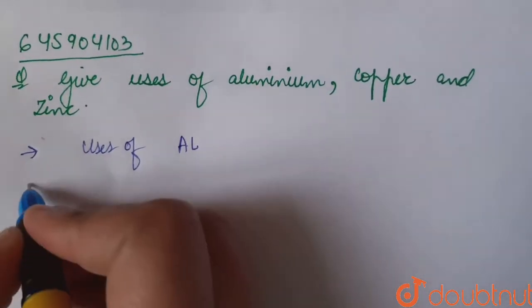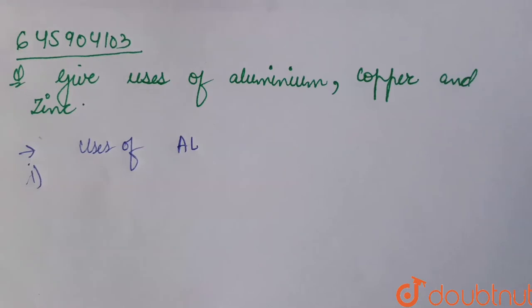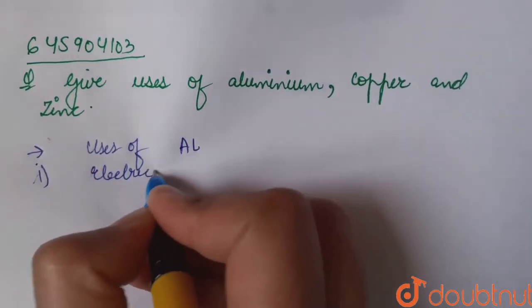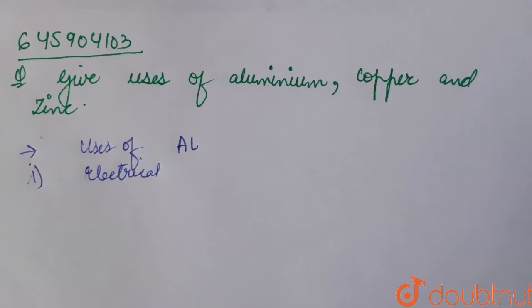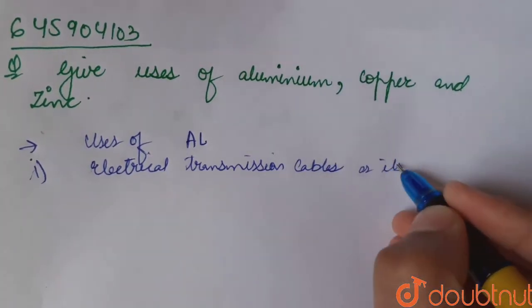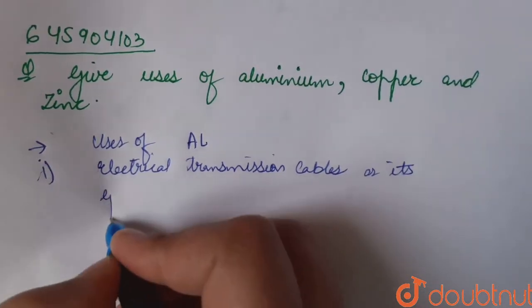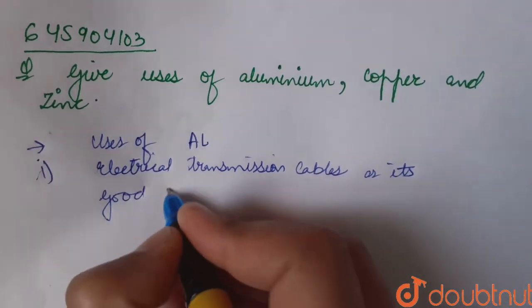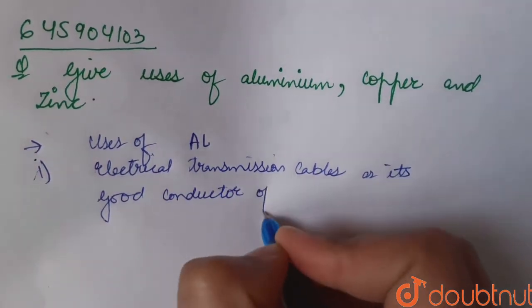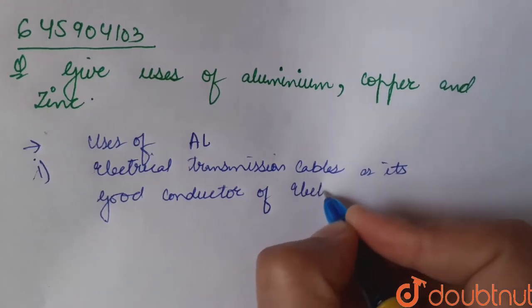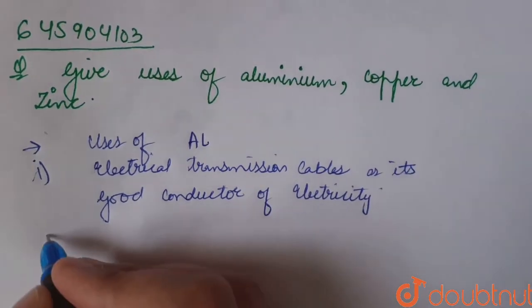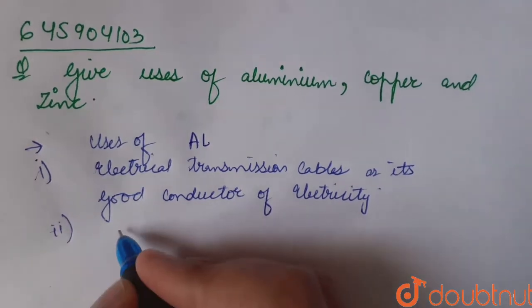Number one: Aluminum is used for electrical transmission cables as it is a good conductor of electricity. Another use of aluminum is it's used as a reducing agent.